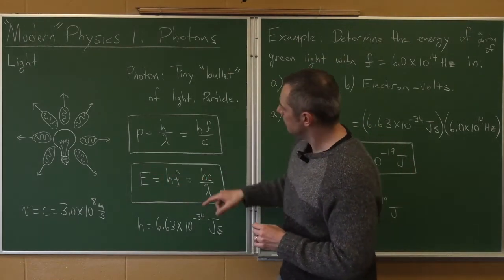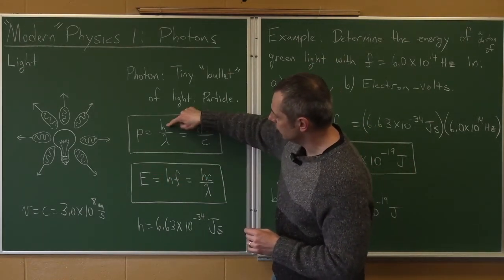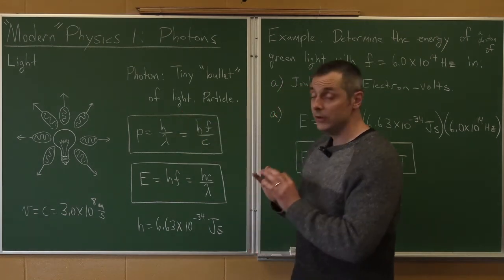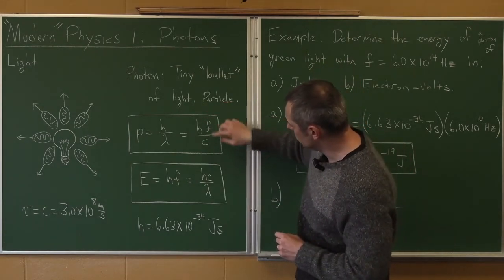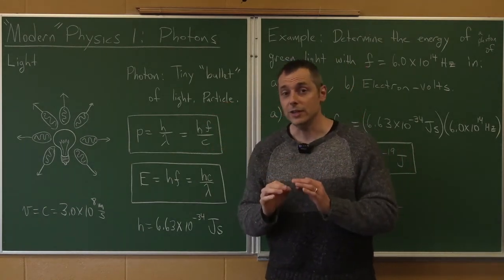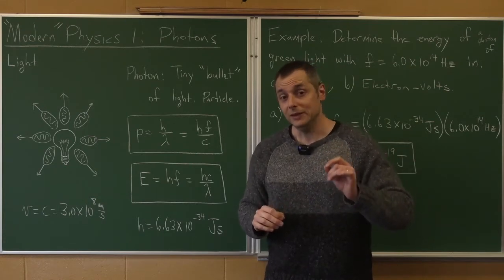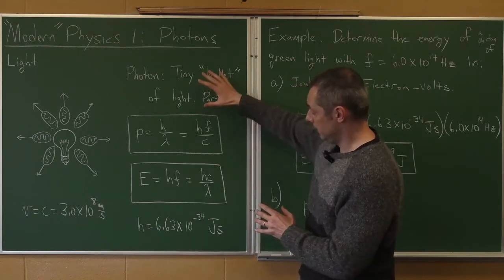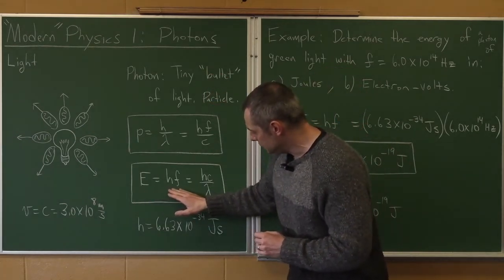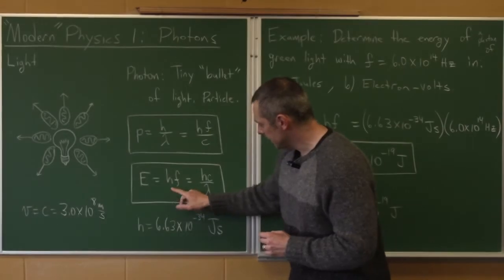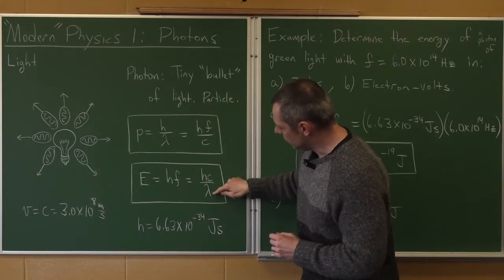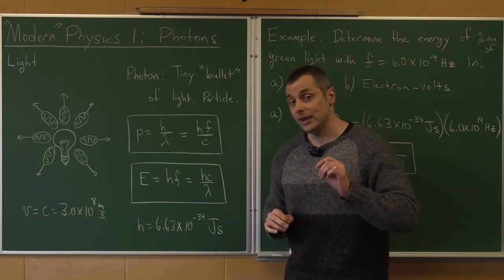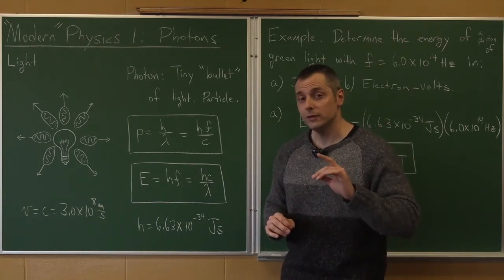Well, P for momentum is some constant H, called Planck's constant, over the wavelength of light. Or if you have the frequency, you could use HF over the speed C. Again, C is a special symbol, the speed of light in a vacuum, 3 times 10 to the 8th. The energy of a photon of light, of these little bullets, is HF, E for energy equals HF, that same constant, or if you have the wavelength, HC over lambda. And here's that constant, 6.63 times 10 to the minus 34th joule seconds.